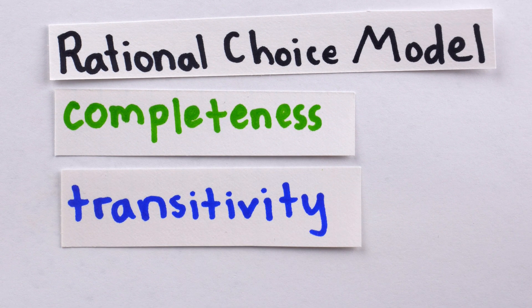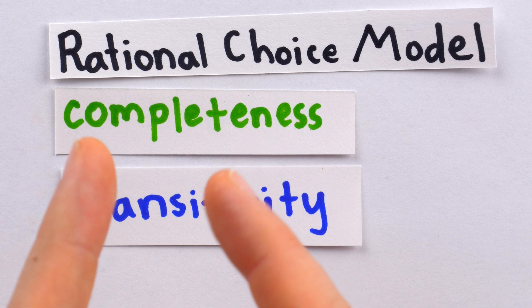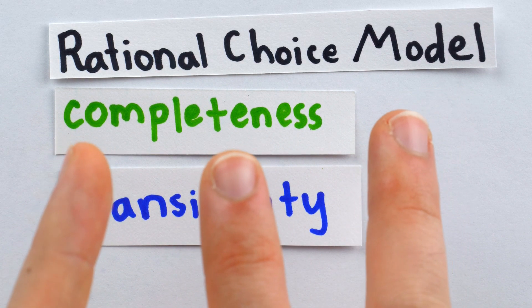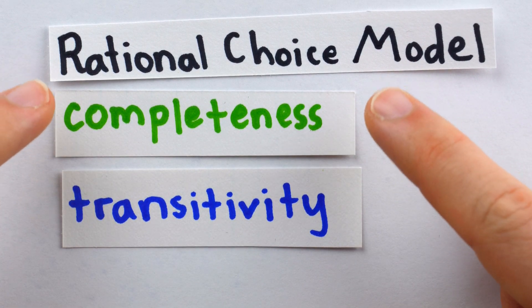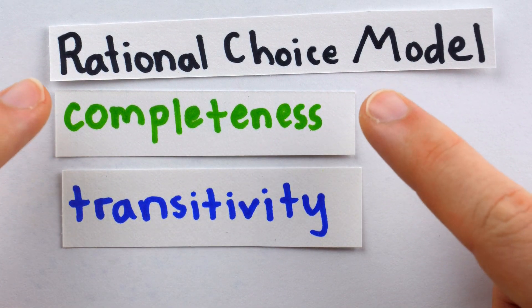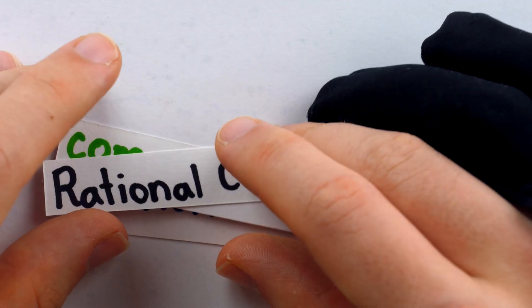Transitivity means exactly what you would expect. If the rational actor prefers A to B and B to C, then they must prefer A to C. Together, these two axioms guarantee that on a set of choices, a rational actor will have a potentially not unique optimal choice that maximizes utility of some sort based on their preferences.